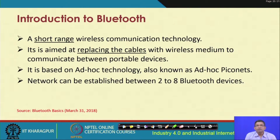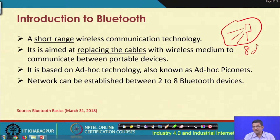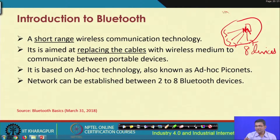There is a concept of Piconet and scatter nets in Bluetooth. A Piconet is analogous to a cell in a cellular network. Within a Piconet you have one master and up to 7 slave devices, so up to 8 devices can be supported within a single Piconet. You can then have another Piconet where a common slave node can also serve as a master for that Piconet.